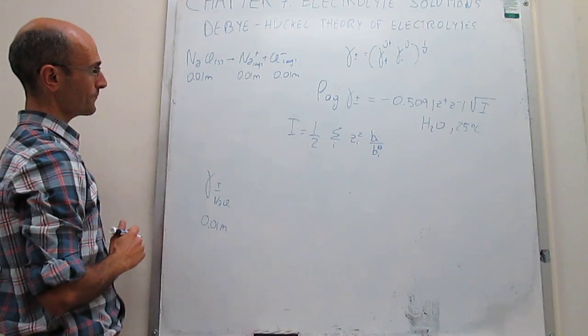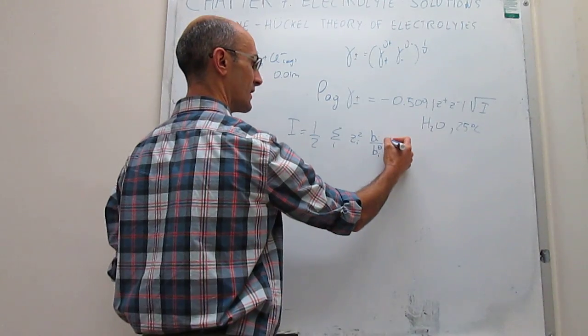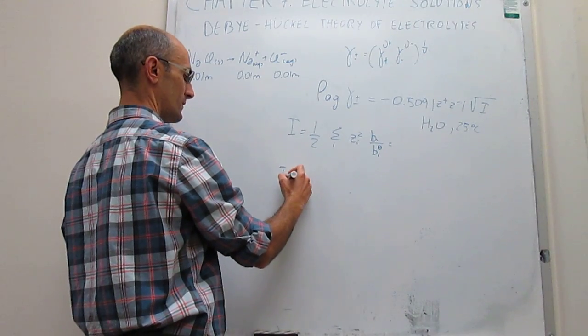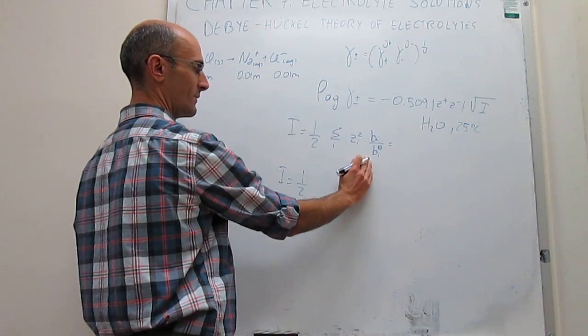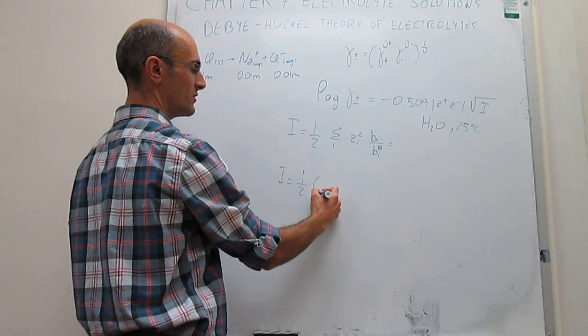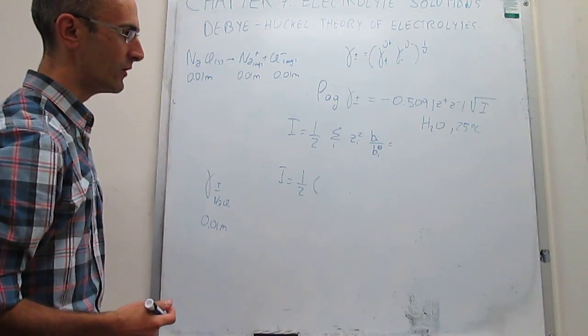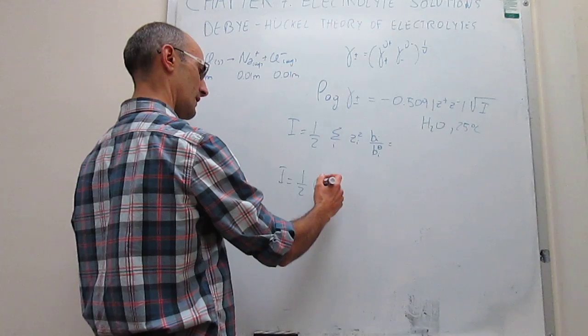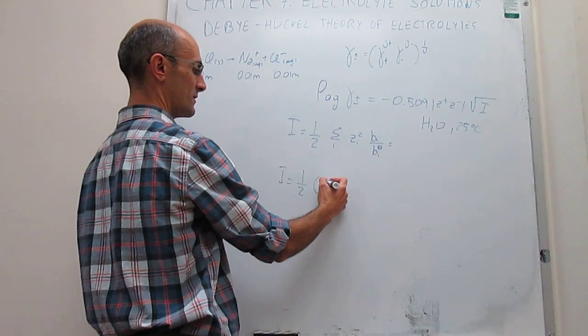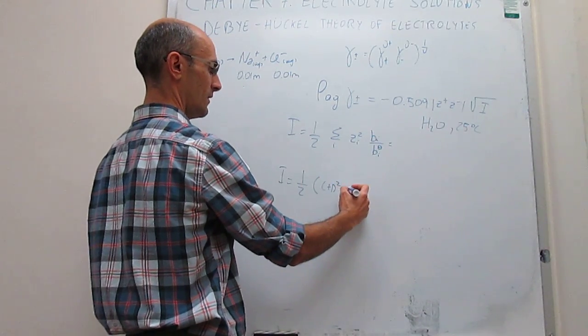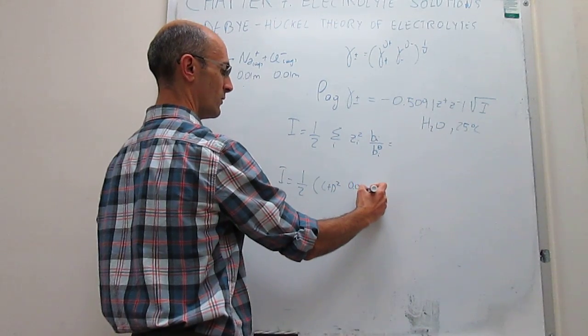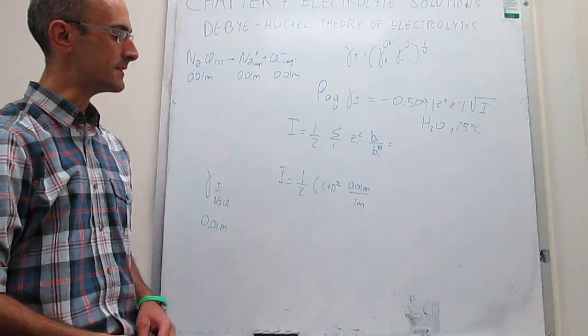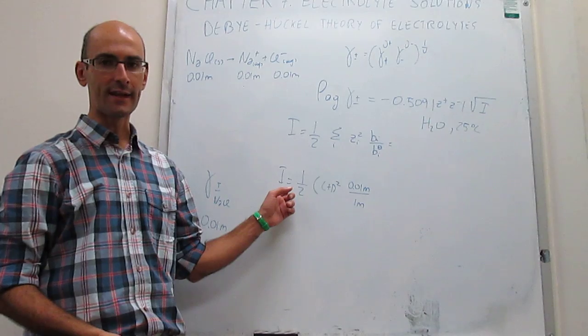From this consideration, we can write what the ionic strength is. The ionic strength is going to be equal to one-half, and then the sum extended over all of the ions of the charges squared, multiplied by the ratio of the molalities of the ions divided over the reference molalities. Let's take first the first type of ion, sodium: the charge is +1 squared, multiplied by the molality of the ion, which is 0.01 molal over 1 molal. The division by this reference molality assures that the ionic strength does not have any units, much as the mean ionic activity coefficient does not have any units.